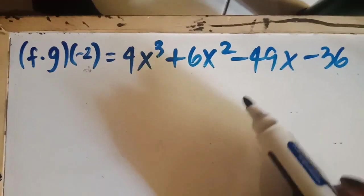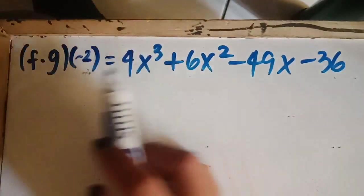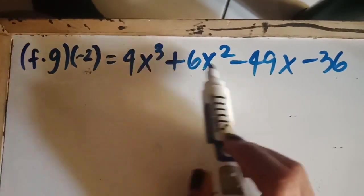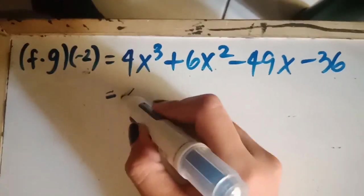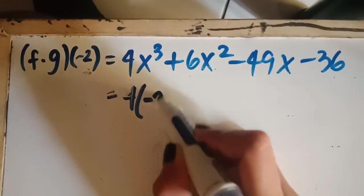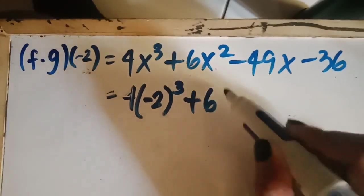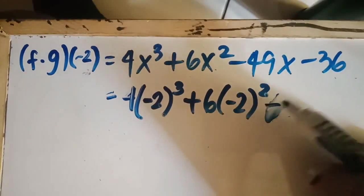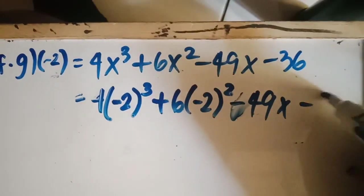For the next step, since based on the given, the value of x is negative 2, we have to substitute the negative 2 on the variable x. So we have 4 times our x, again it's negative 2, times negative 2 raised to 3, plus 6 times negative 2 squared, minus 49x, minus 36.